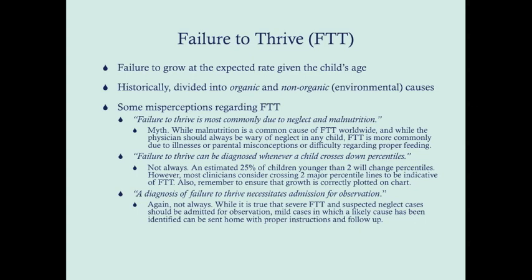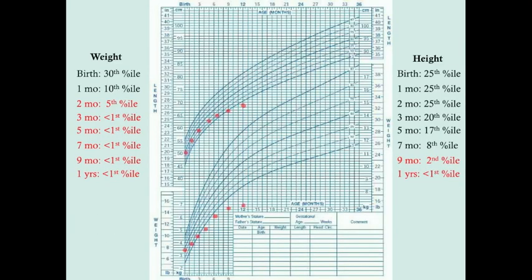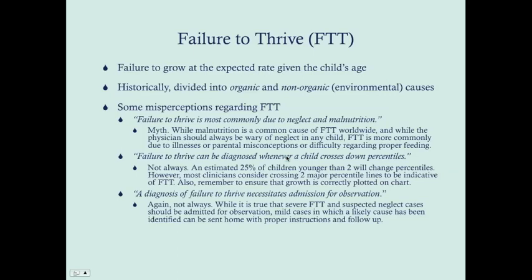Most clinicians will consider crossing two major percentile lines — 97, 90, 75, 50, 25, 10, and 3 — as failure to thrive. If you cross two of these lines down, that's typically considered by most clinicians to be failure to thrive. Also important: remember to ensure that growth is correctly plotted on the chart.